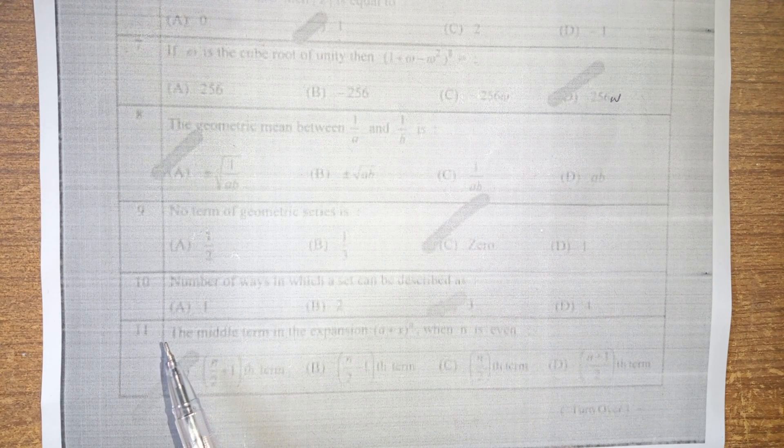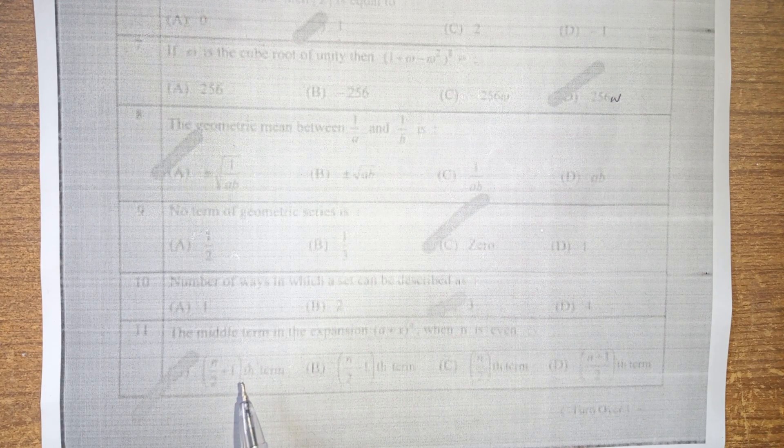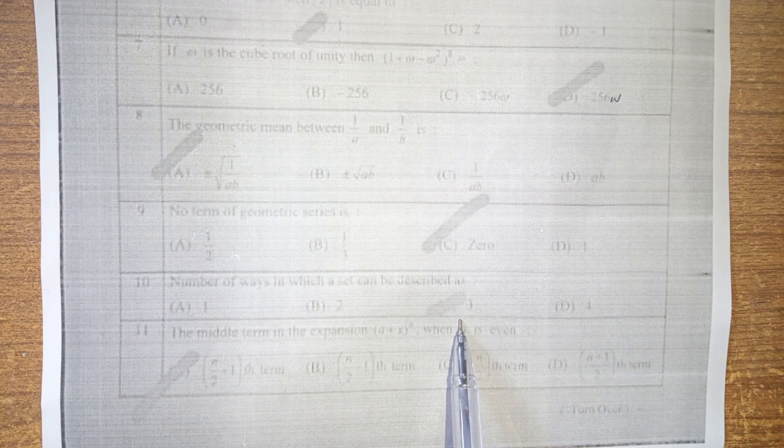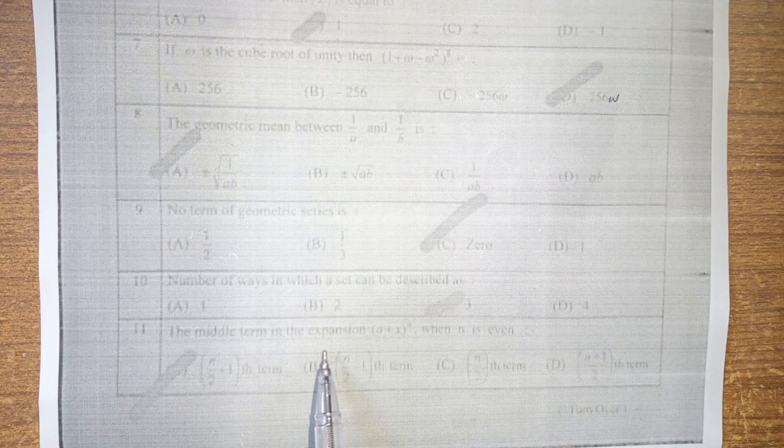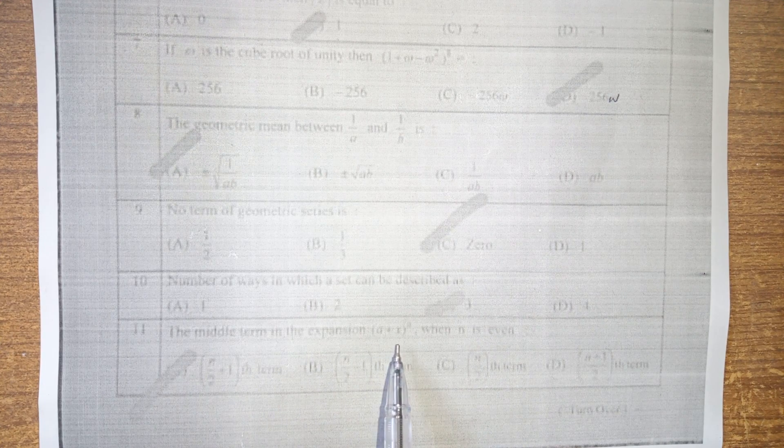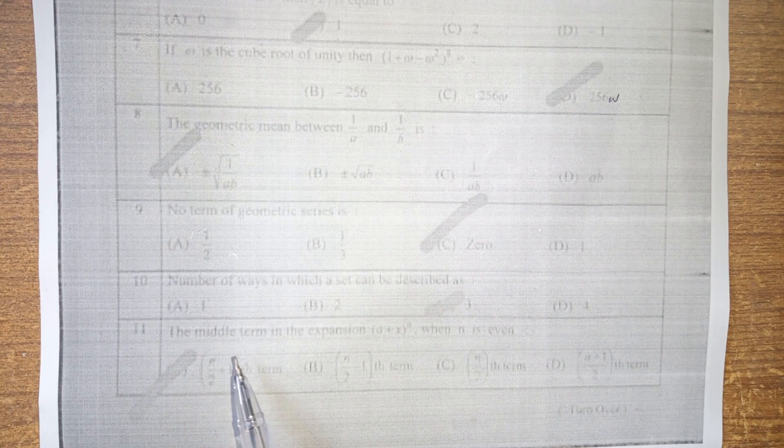After that, the number of ways in which a set can be described, there are 3 ways, option c. After that, the middle term of the expansion a plus x squared where n is even is n over 2 plus 1 term.